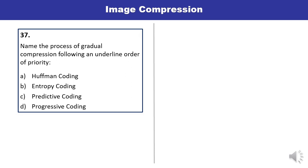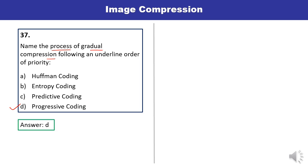Question 37: Name the process of gradual compression following an underlying order of priority — Huffman coding, entropy coding, predictive coding, or progressive coding? Progressive coding is that particular process. This is the correct answer.